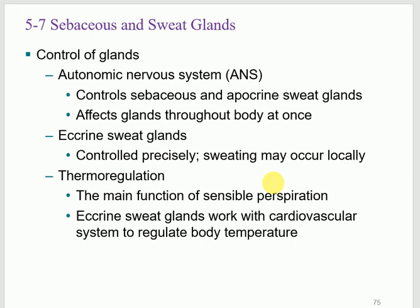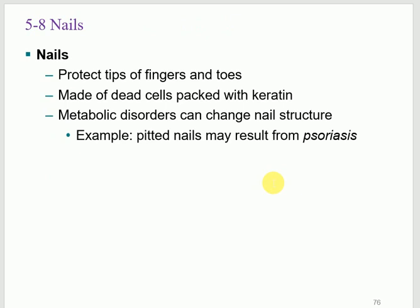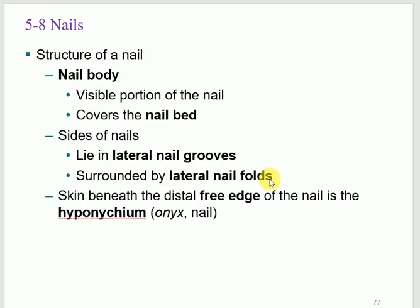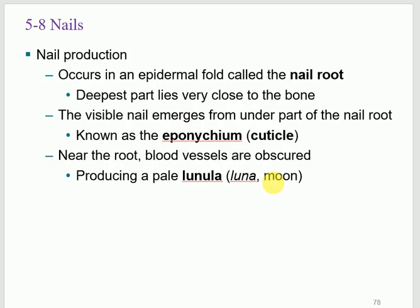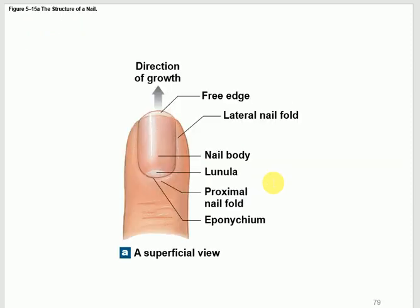Nails consist of different parts. Looking at the picture: there is a skin fold called the proximal nail fold. Then there is the eponychium — that thin layer of skin at the base of the nail that some people push back or trim. The nail itself has various named parts we'll examine in the diagram.